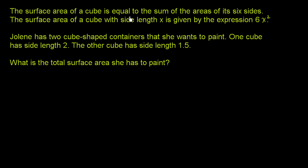The surface area of a cube is equal to the sum of the areas of its six sides. Let's just visualize it. I like to visualize things. So if that's the cube, we can see three sides.